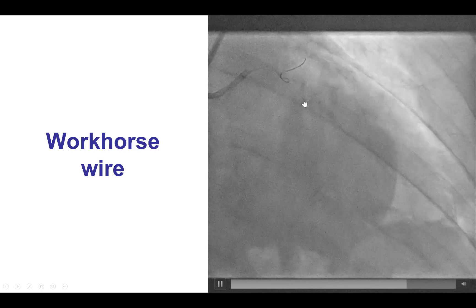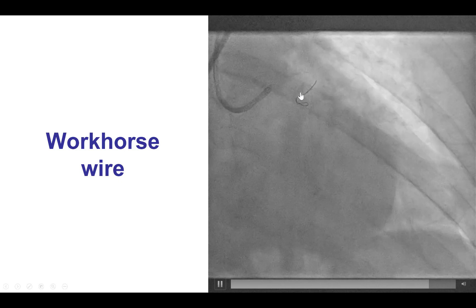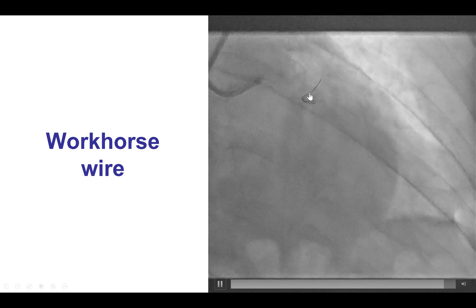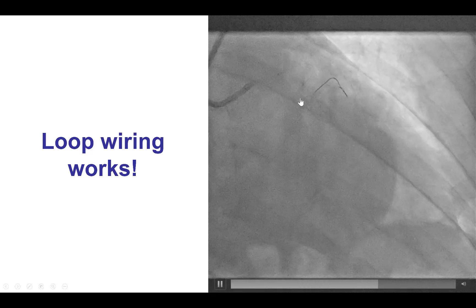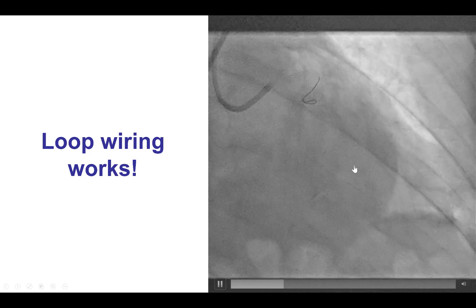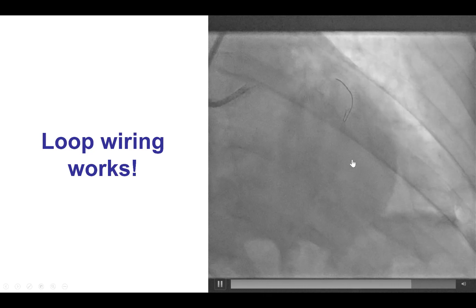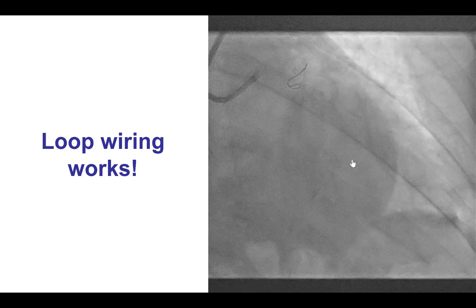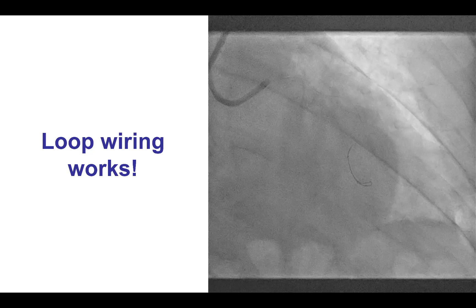Sometimes the prolapsed tip actually can be a good thing, because it prevents the guide wire from going into side branches. And sure enough, we were subsequently able to advance the loop and get it distally into the vessel. So sometimes being patient and just using a Workhorse guide wire may be successful, even in cases of significant tortuosity.